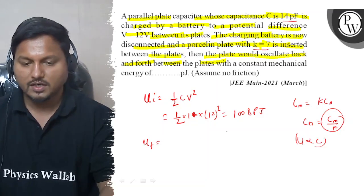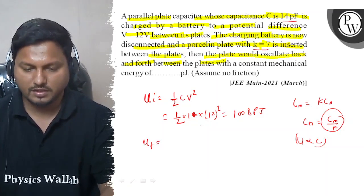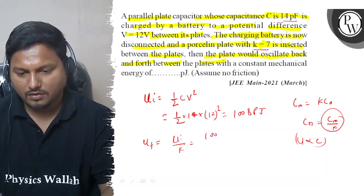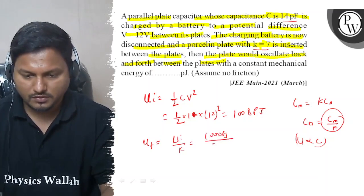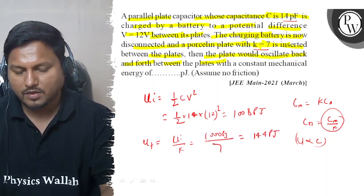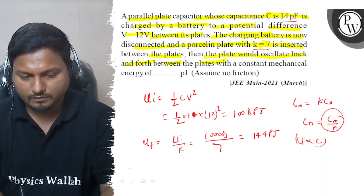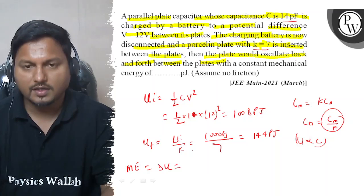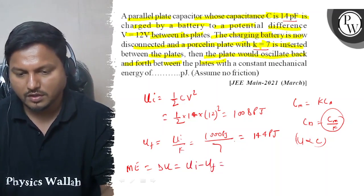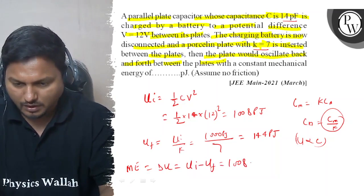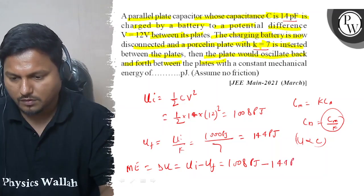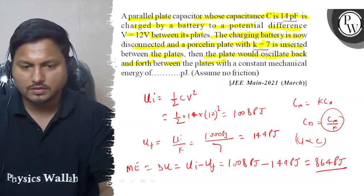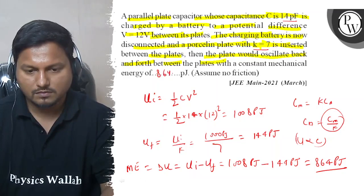Since energy is proportional to capacitance, U final equals U initial divided by k, which is 1008 picojoules divided by 7, that is 144 picojoules. The change in mechanical energy equals U initial minus U final, that is 1008 minus 144 picojoules, which equals 864 picojoules.